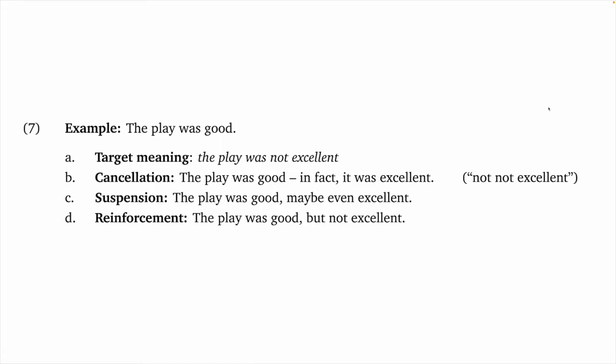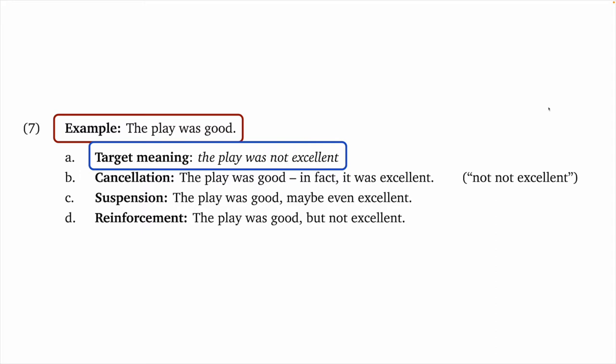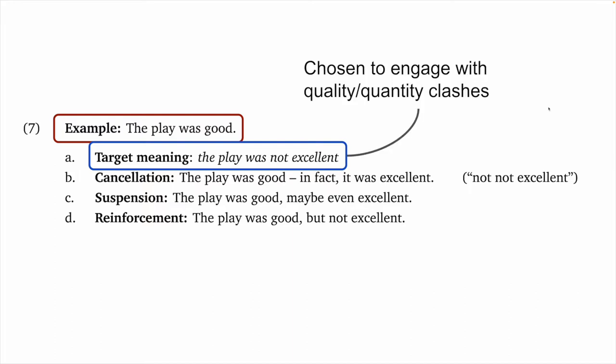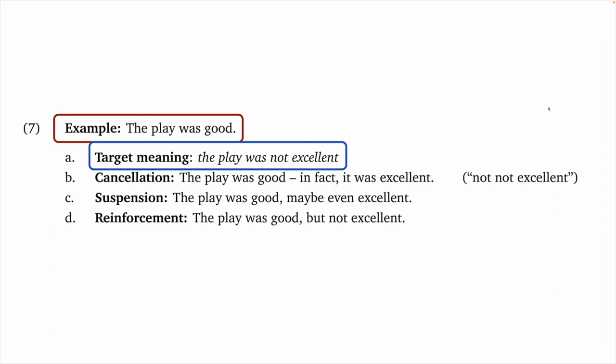Okay, those are our core tests. Let's get a feel for how they work using some examples. Our example in 7 is 'the play was good,' and our target meaning here is 'the play was not excellent.' The target meaning is something you choose — in principle, we could be looking at any target meaning, but here I've chosen one that I know will engage with the quality-quantity clashes we've discussed around adjectives like 'good' and 'excellent.' For cancellation: 'The play was good; in fact, it was excellent.' This seems very natural to me, so I would say that the target meaning has been successfully cancelled. We have evidence that our target meaning is an implicature.